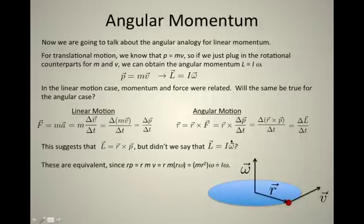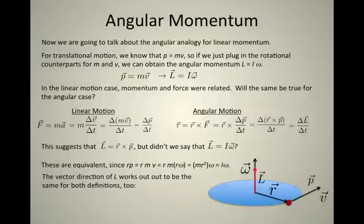So these two descriptions for angular momentum, the cross product R cross p and Iω, those two things are actually the same. And the vector direction works out to be the same as well. We know that if ω points up in this picture when R and v point off to the side like that...